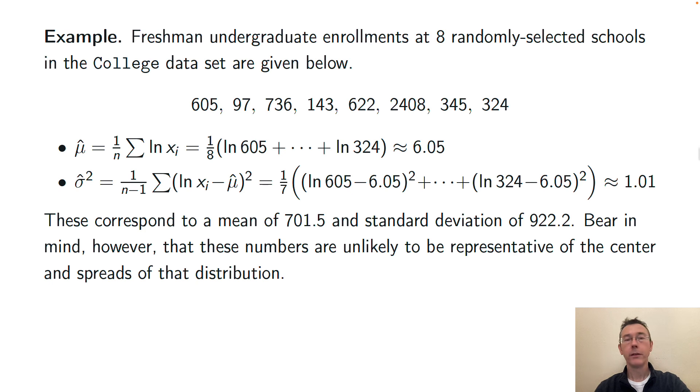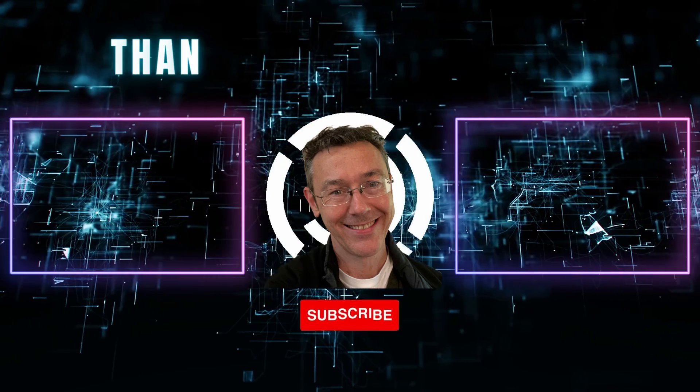If you use the formulas from five or six slides ago, then you can calculate that these correspond to a mean for freshman undergraduate enrollment of 701.5 and standard deviation of 922.2. But once again, you need to bear in mind that these numbers might not be very representative of the center and spread of that distribution just because those distributions are so skewed. By the way, the actual parameters in the College data set are μ equals 6.18 and σ equals 0.91, so in this case they're not too far off.